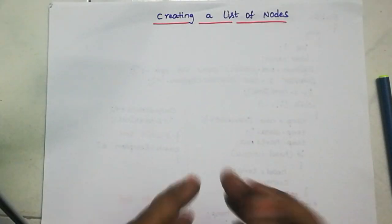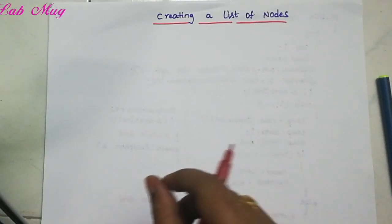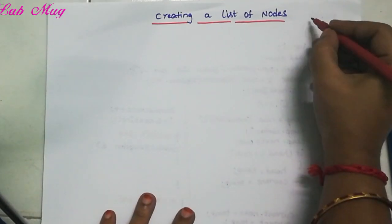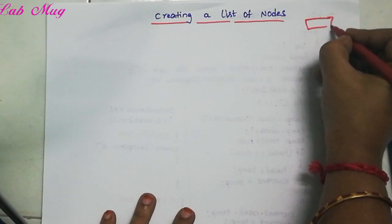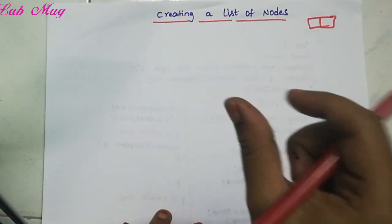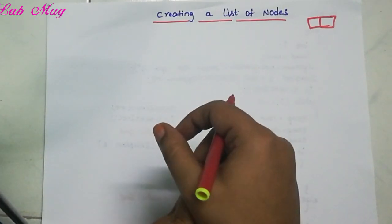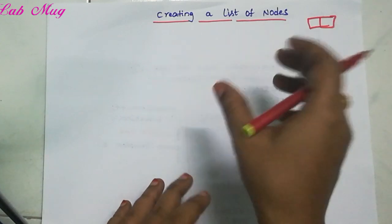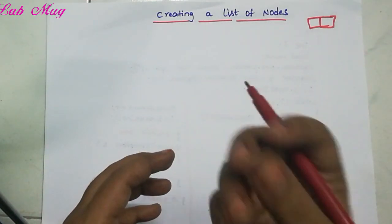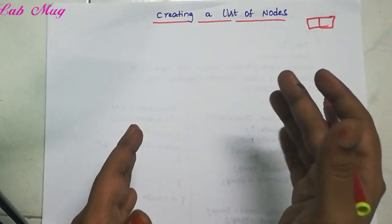Hi students. In the last class, we created the logic for a class. When we create a class, for example, we can create a single linked list. We created a basic class in the first class. So in this video, we will talk about creating a list of nodes. If we create a linked list, we can create a single linked list.